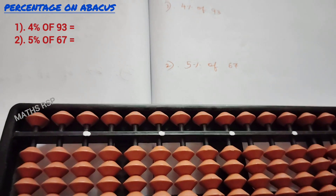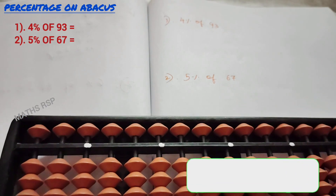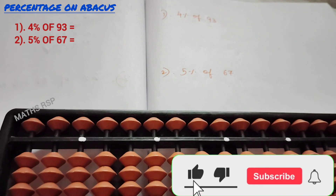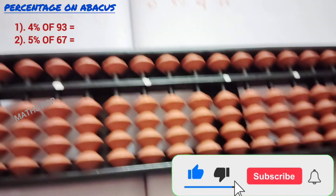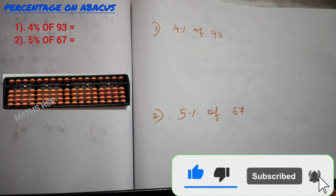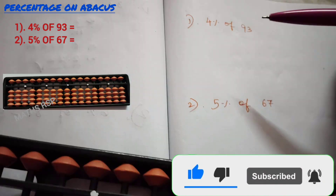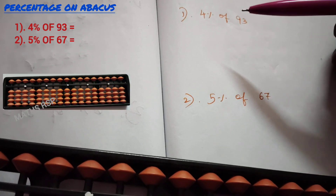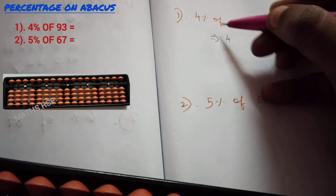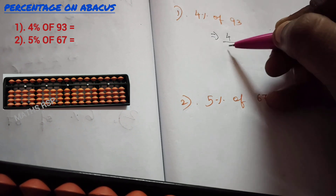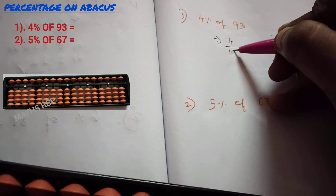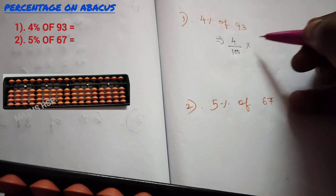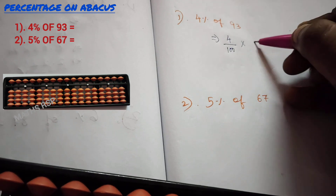Hello friends, in this video we are going to solve percentage problems on abacus. First question: 4 percentage of 93. First we'll see how to solve it manually. 4 percentage means divided by 100, so 4 by 100, multiplied by 93.